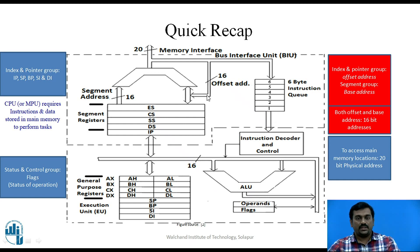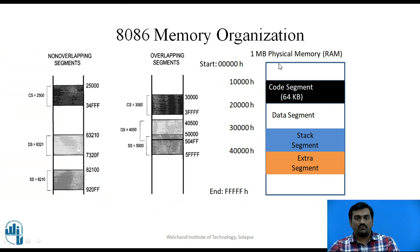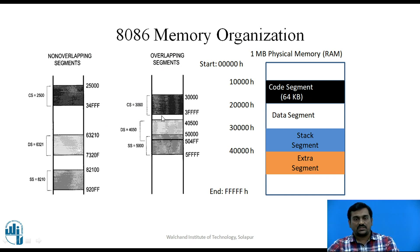The job of the BIU is to fetch instructions from main memory — which is RAM — using the 20-bit address line. As mentioned in the previous video, the 8086 has 1 MB of physical memory. This memory is segmented for different purposes. There are 16 logical segments, each of 64 kilobytes. At any time the microprocessor can access only 4 segments, each of 64 kilobytes. These segments are generally called Code Segment, Data Segment, Stack Segment, and Extra Segment. These segments can be of two types: non-overlapping, where starting addresses are far apart in memory, or overlapping, where the end addresses of some segments extend into other segments.